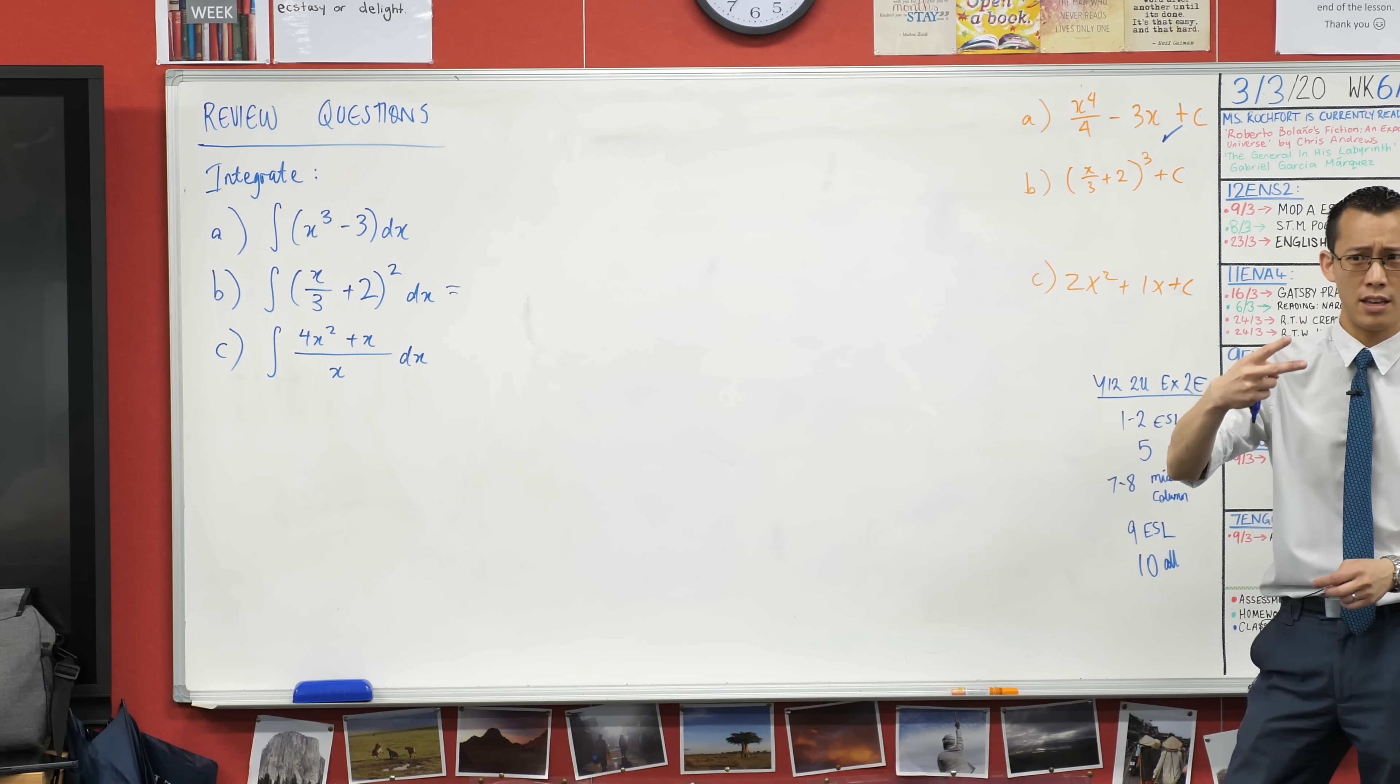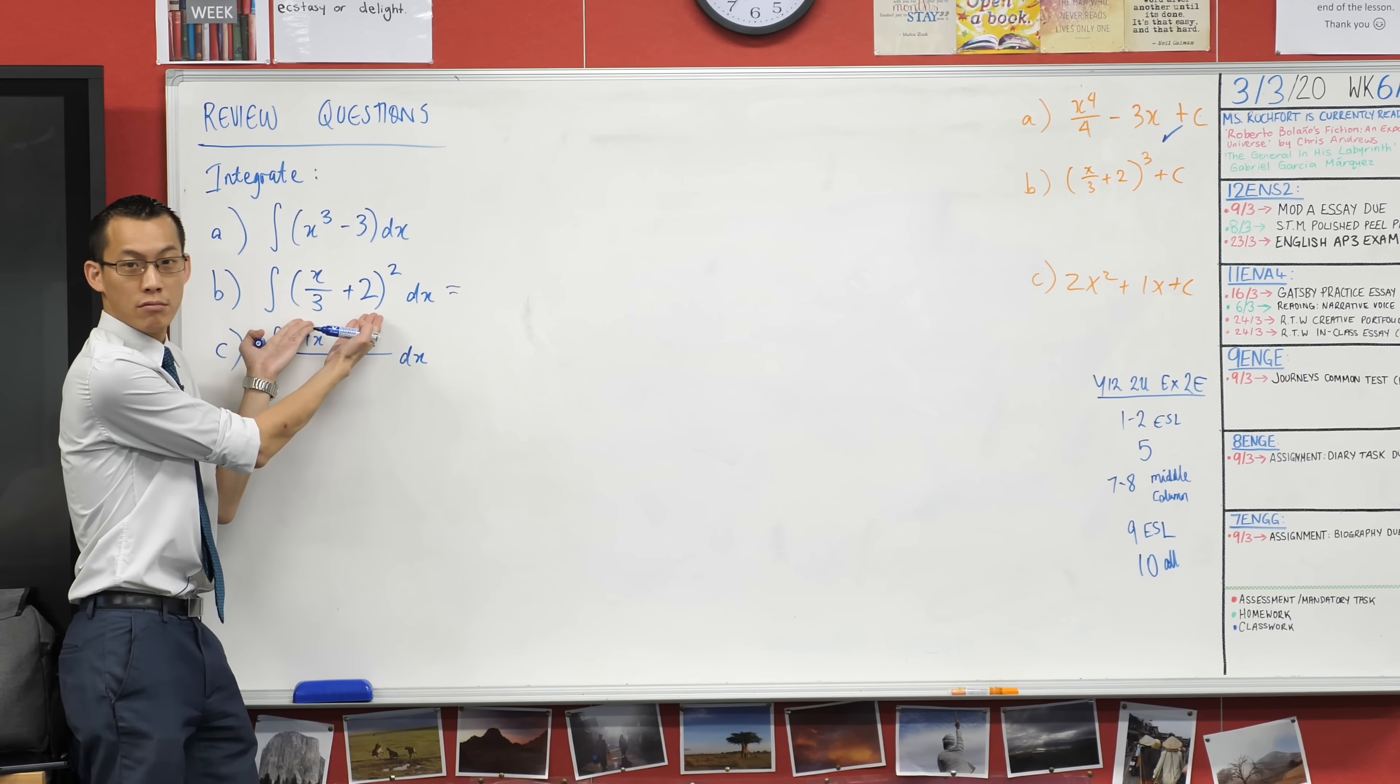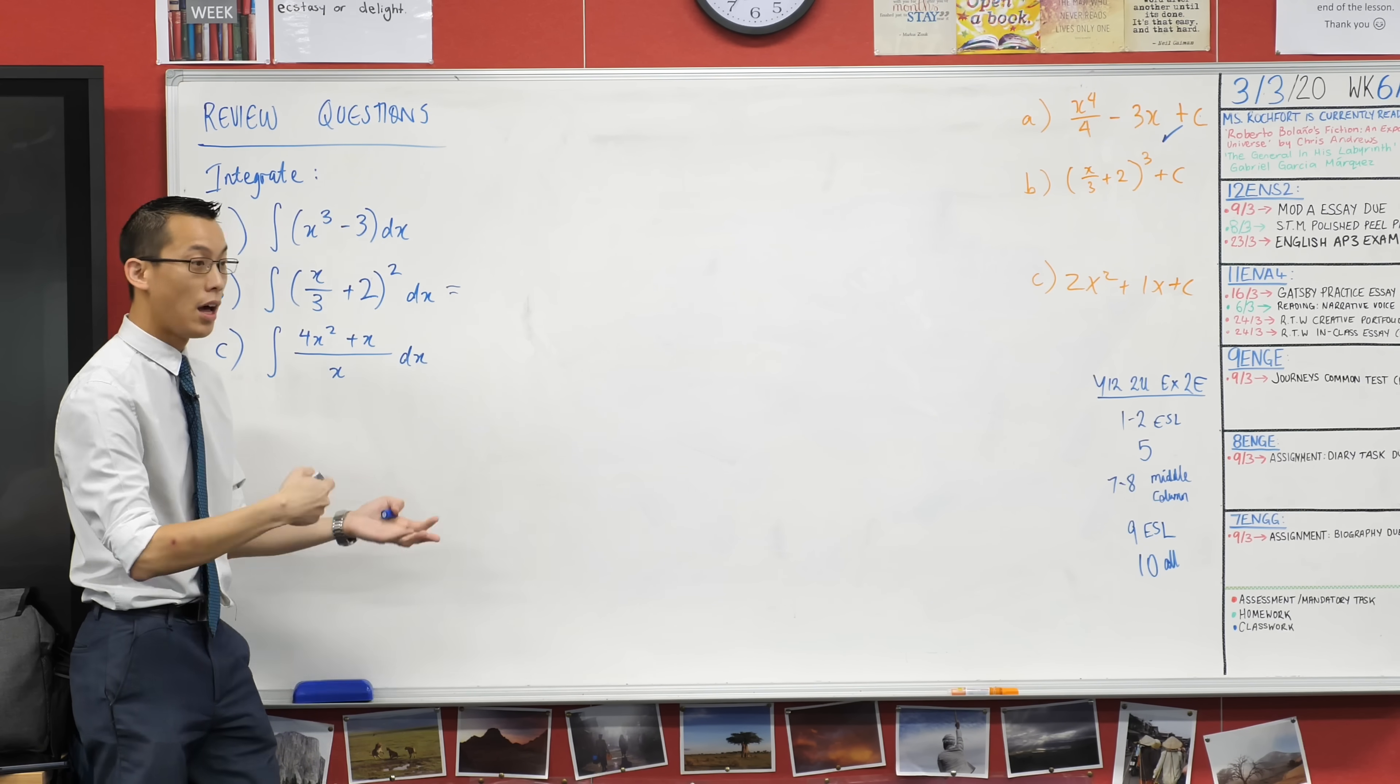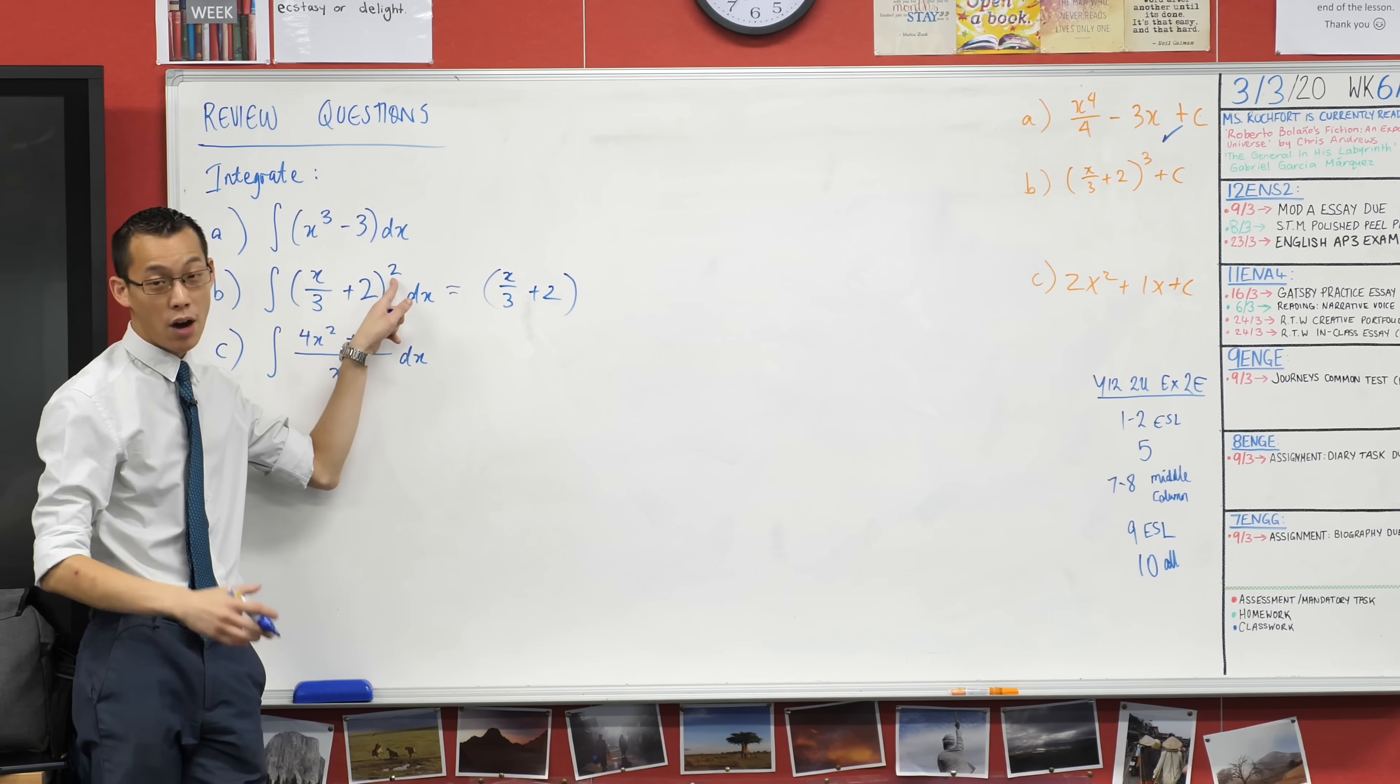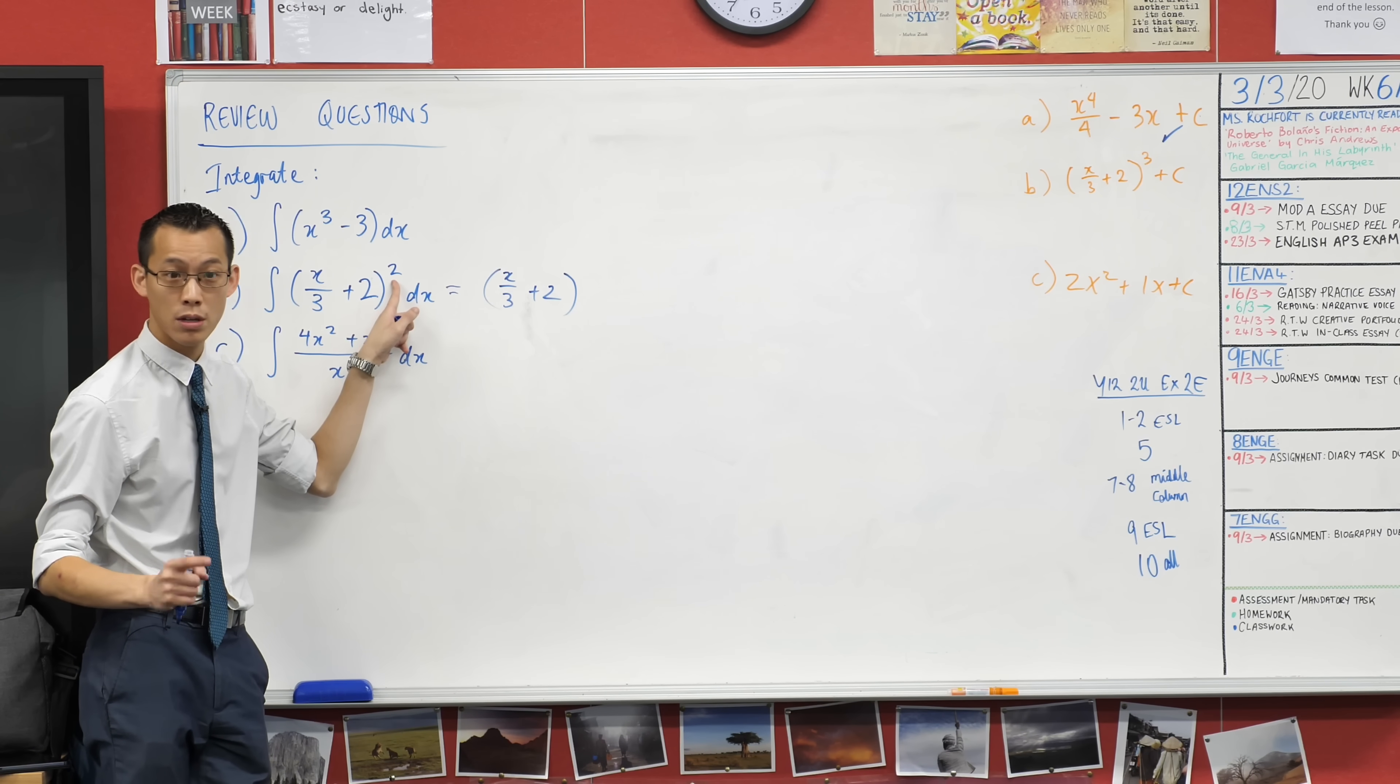I can use the rule we developed a couple lessons ago, which is the reverse chain rule. Here's a function, right, and you're applying a different function to that. So I'm going to try and undo reverse chain rule. Let's have a go at how he did it. You've got this x over 3 plus 2, and the power used to be 2. When we're doing reverse chain rule, what happens to the index? The index goes to plus 1, so it's now a 3.